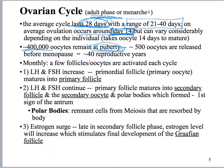Going back to oogenesis at puberty: at menarche you've got about 400,000 oocytes that have made it — at birth you had about 2 million, now you've got about 400,000. You're only ever going to use about 500, so it doesn't matter that you lost over a million and a half oocytes. About 500 oocytes will get released during the 40 years of reproductive time a female has.